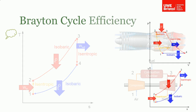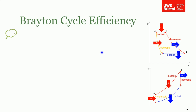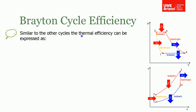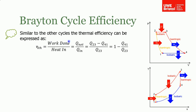Now we're going to derive the thermal efficiency for this cycle using exactly the same method as for the Otto and diesel cycles. Thermal efficiency for any cycle is the work done over the heat in. Because we go from one to two to three to four and back to one, the change in internal energy is zero, so net work equals net heat. Therefore thermal efficiency is Q_net over Q_in, which is Q_(2→3) minus Q_(4→1), all over Q_(2→3), giving us one minus Q_(4→1) over Q_(2→3).